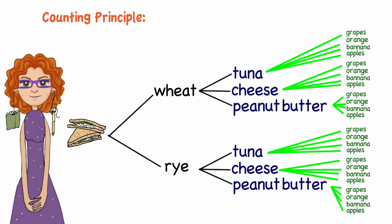But I can do it using the counting principle. By multiplying two times three times four, I can quickly see that I have 24 choices.